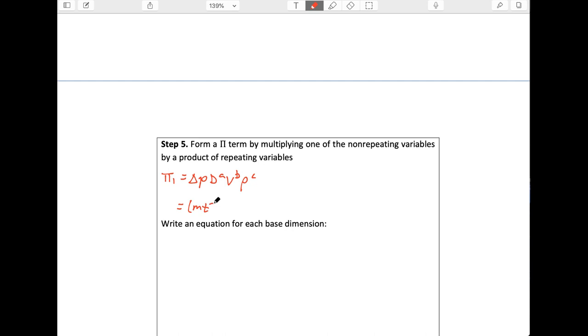And so we get M, T to the minus two, L to the minus one. We've got D, which was a length to the A. We've got velocity, which is a length per time to the B. And lastly, we had density, which was mass length to the minus three to the C.